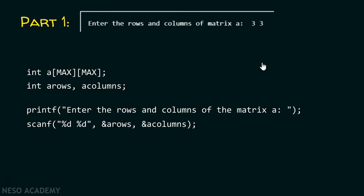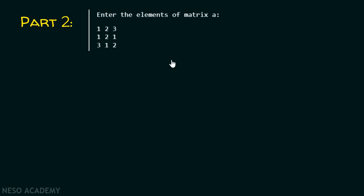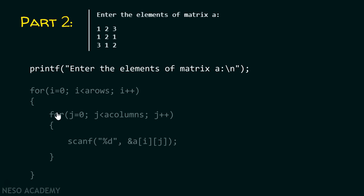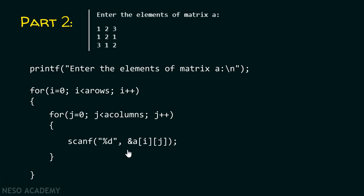Let's see part number two. In part two, we will ask the user to enter the elements of matrix A and B. I will explain this process for matrix A — the same process is applicable to matrix B as well. We will first ask the user to enter the elements of matrix A, and with the help of two for loops, we can input the elements entered by the user inside matrix A. I have already explained this process in previous lectures.